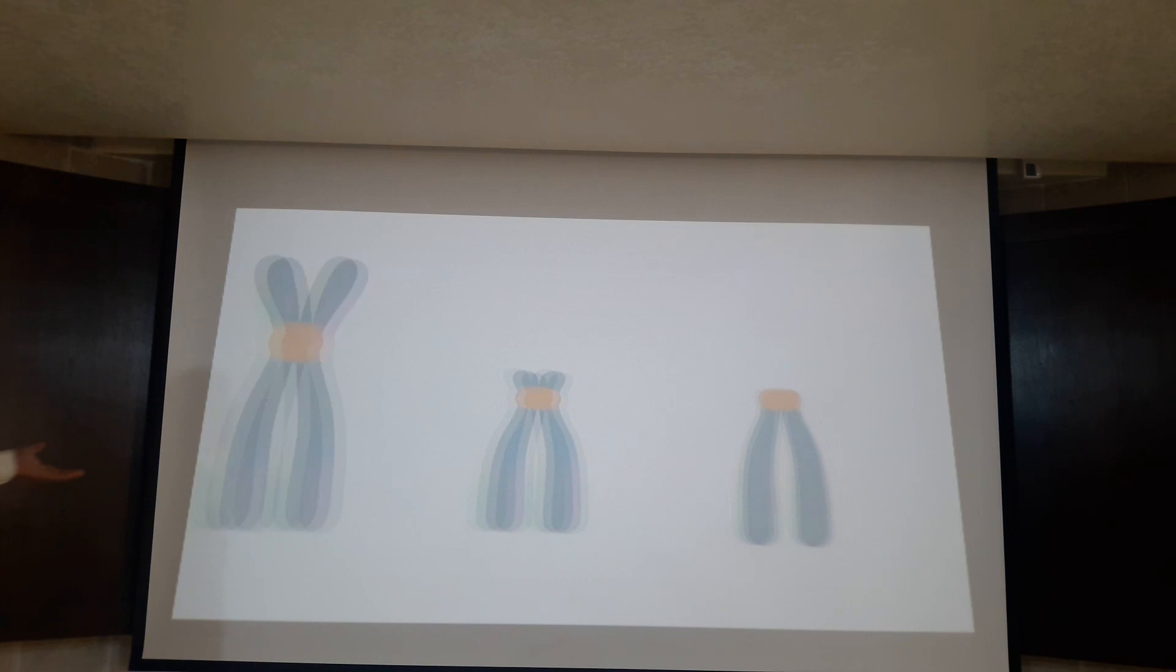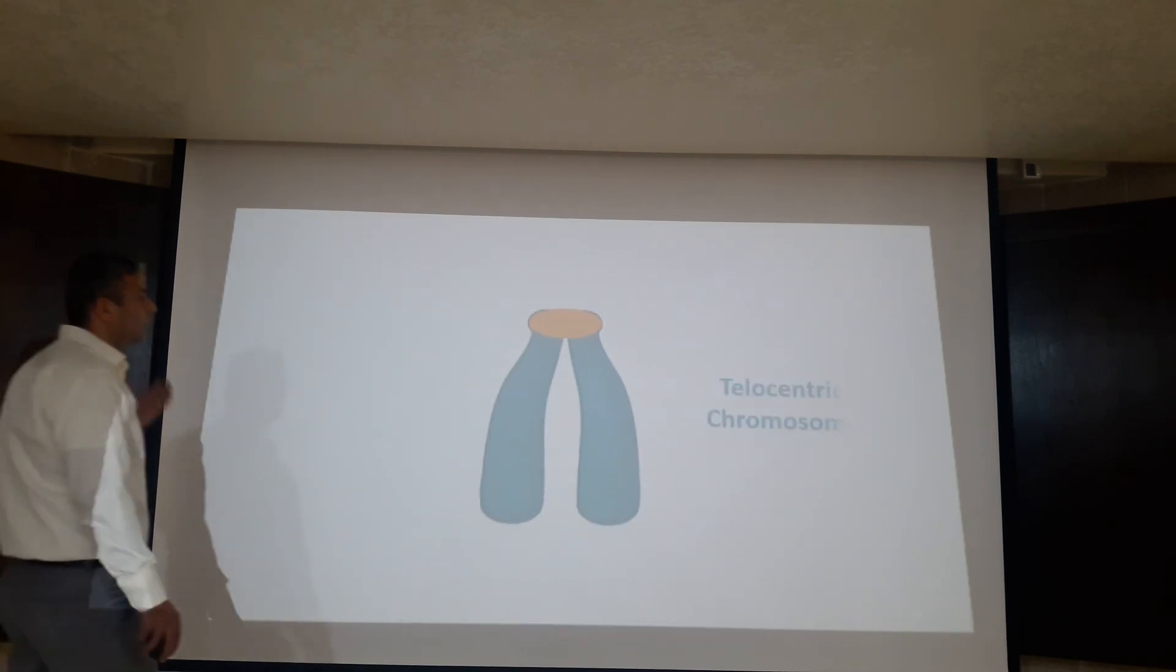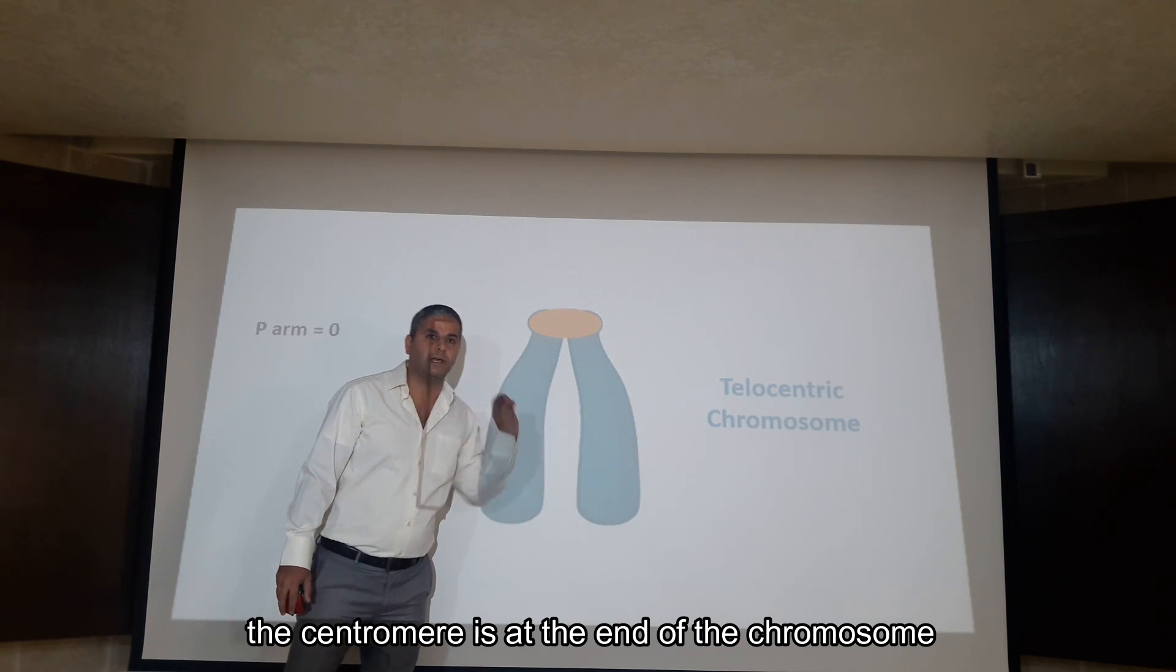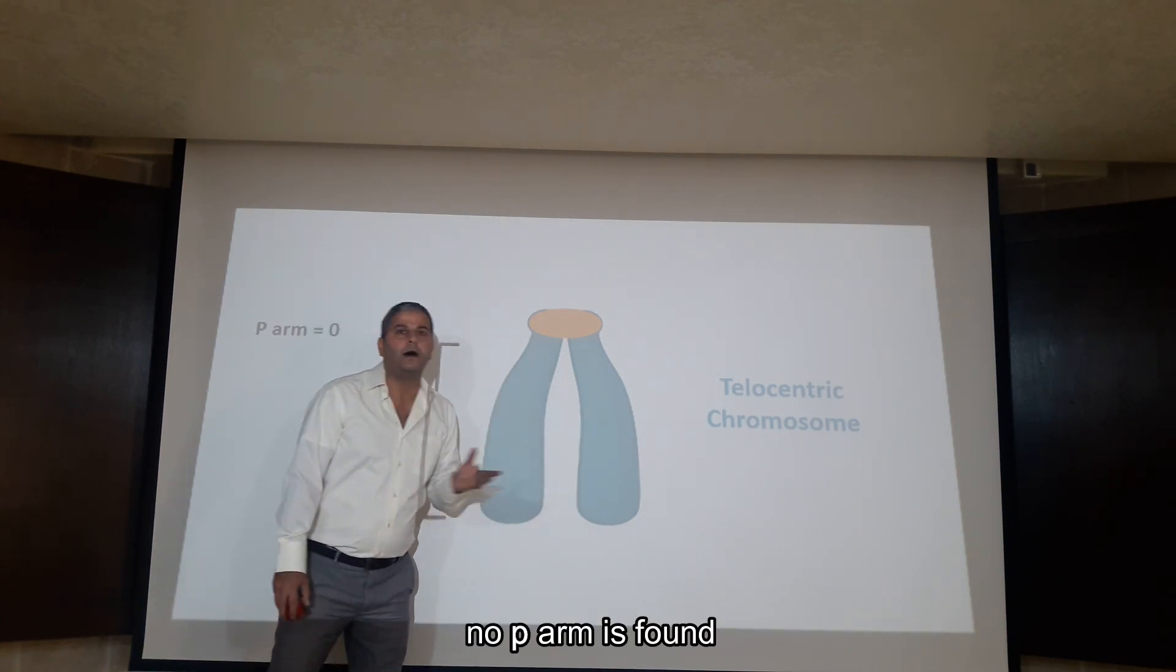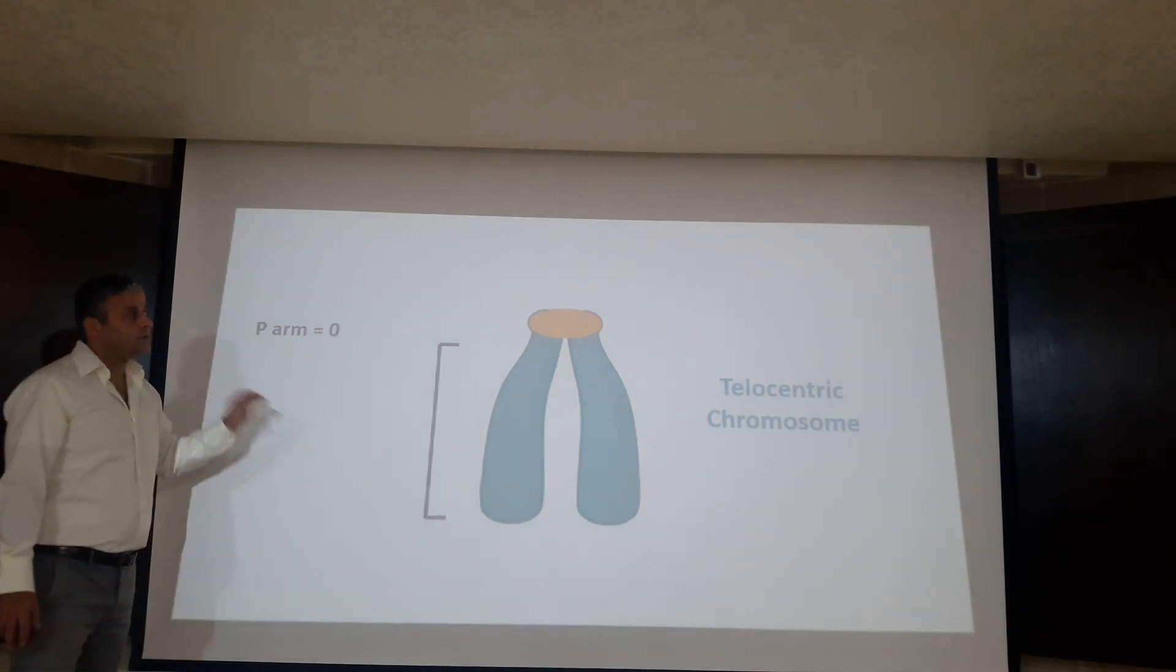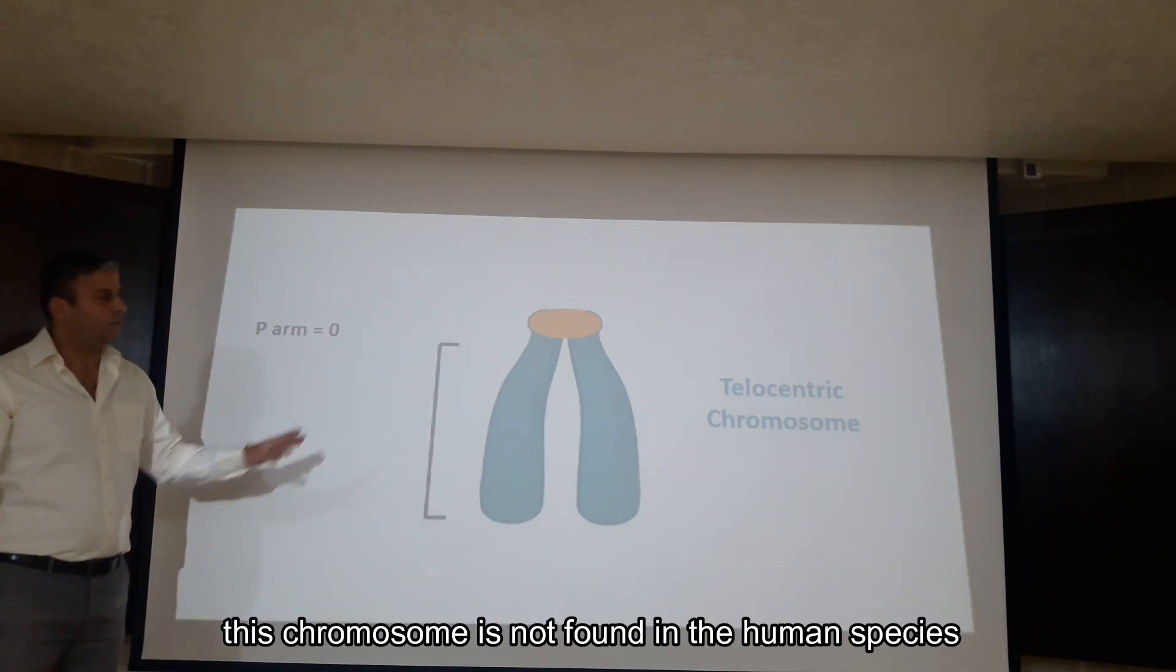Finally, in telocentric chromosomes, the centromere is at the end of the chromosome, no P-arm is found. And as we have said, this chromosome is not found in the human species.